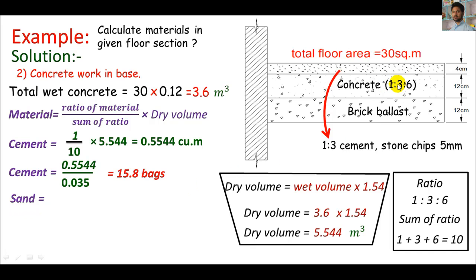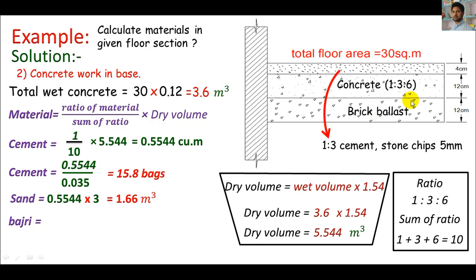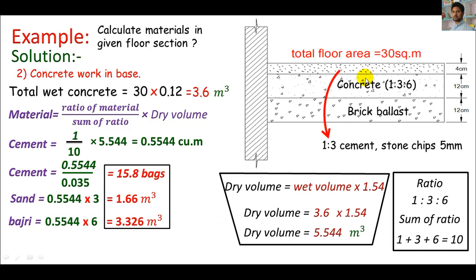Looking at the ratio, the fine aggregate ratio is 3, meaning fine aggregate must be three times the cement volume. We already have cement as 0.5544, so multiplying by 3 gives fine aggregate of 1.66 cubic meters. For coarse aggregate, looking at the ratio — 6 means coarse aggregate must be six times the cement, or two times the fine aggregate. Multiply the cement volume by 6 to get coarse aggregate. That completes our second approach.